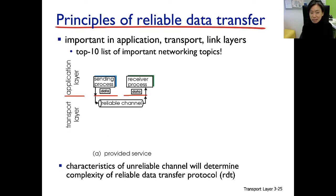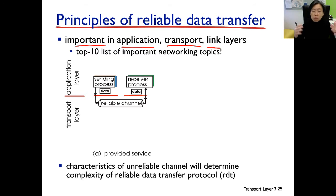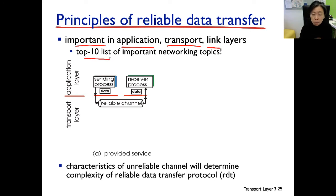So let's talk about reliable data transfer. It's not only challenging, it's also extremely important. It's important not just at the transport layer — some link layer services might also implement some level of reliable data transfer. At the application layer, someone might use UDP as the underlying transport and implement their own reliable data transfer, perhaps more efficient than TCP. So it's one of the top problems when designing a communication network.